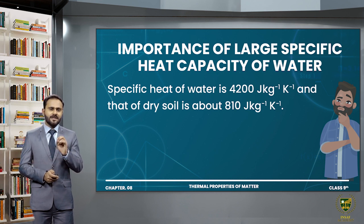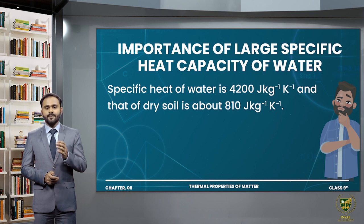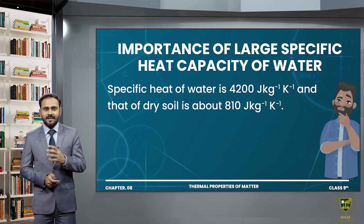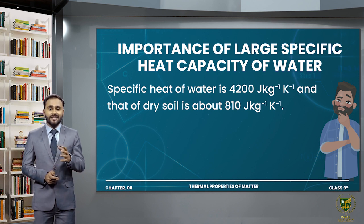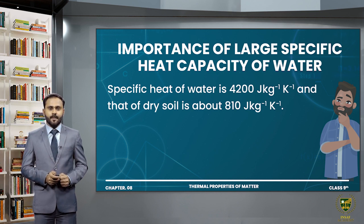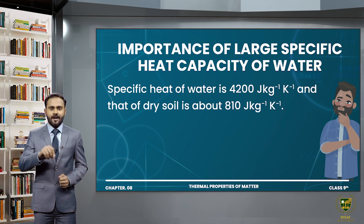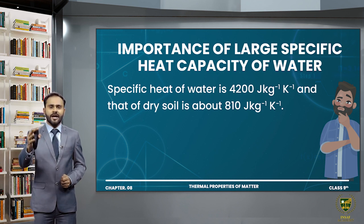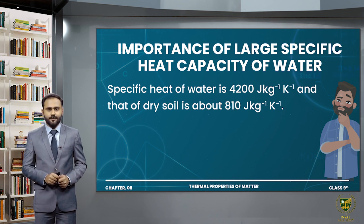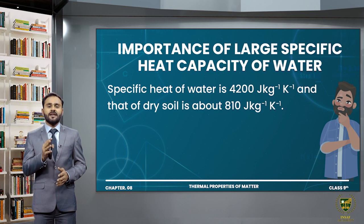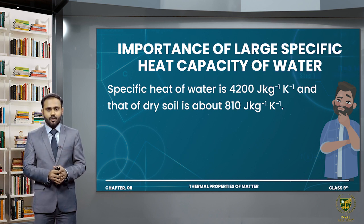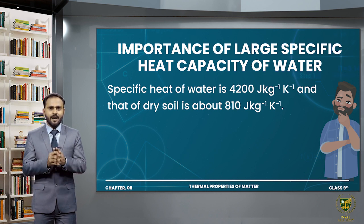Ab yahan aap ye dekh rahe hain ke water ki specific heat capacity bahut zyada hai. Toh isi wajah se, wo areas jo ke paani se kaafi door hote hain, un mein temperature change bahut jaldi aata hai. Aur wo area jo ke paani ke bahut kareeb hote hain, un mein temperature change jaldi nahi aata. Jaise ke agar hum baat karein, wo area jo ke samandar ke kareeb hain, un areas mein temperature variation zyada nahi hoti. Lekin wo area jo ke samandar se bahut door hai, un area mein temperature variation bahut jaldi aa jaati hai — just because of the specific heat capacity. Water ki specific heat capacity bahut zyada hai toh large amount heat ko apne andar absorb kar sakta hai, aur soil ki heat capacity bahut kam hai toh wo bahut kam heat ko apne andar absorb karta hai.